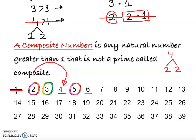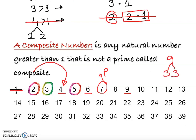Seven cannot be broken down, so seven is prime. Now, some of you may notice two was even, while three, five, and seven are odd. You might think nine is odd, therefore prime — but no. Nine breaks down as three times three, so nine is not prime.